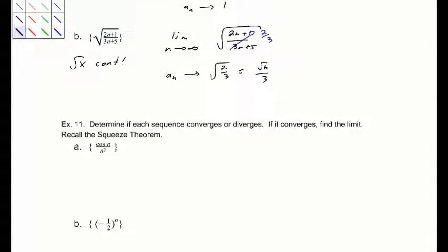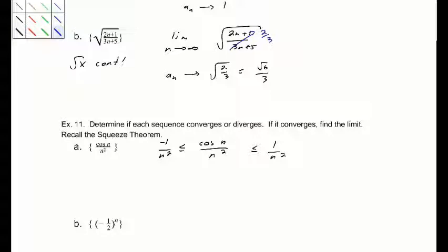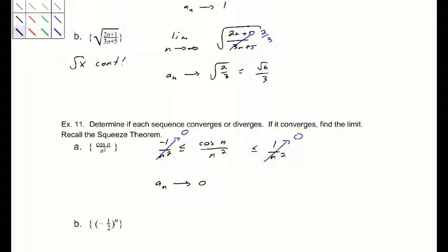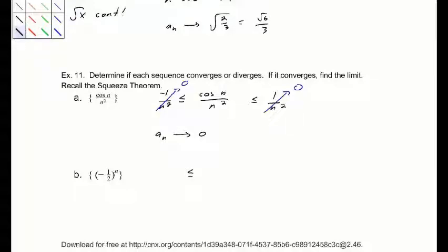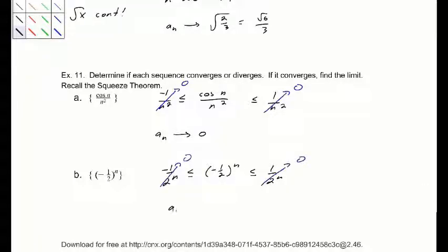It's important to recall the squeeze theorem here. Cosine is stuck between negative 1 and 1, so cosine n over n squared is between negative 1 over n squared and 1 over n squared. As both go to 0, the sequence converges to 0 as well. Similarly, negative 1/2 to the n is bounded between negative 1 over 2 to the n and 1 over 2 to the n. As both go to 0, a sub n converges to 0.